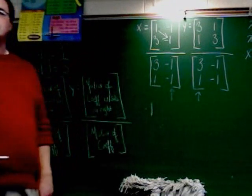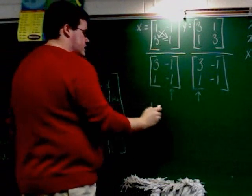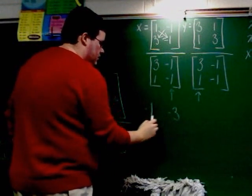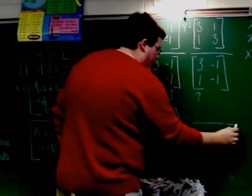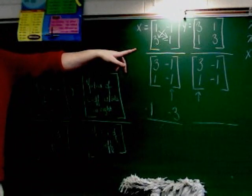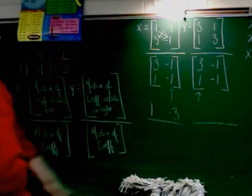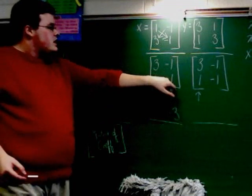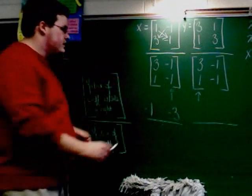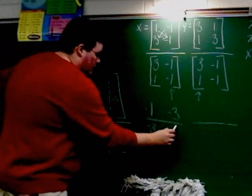Then I multiply coming back the other way. Negative 1 times 3 is negative 3. I've got to do the same thing for all my other matrices. Again, you always go this way. Then you come back and go this way. So 3 times negative 1 is negative 3. Negative 1 times 1 is negative 1.